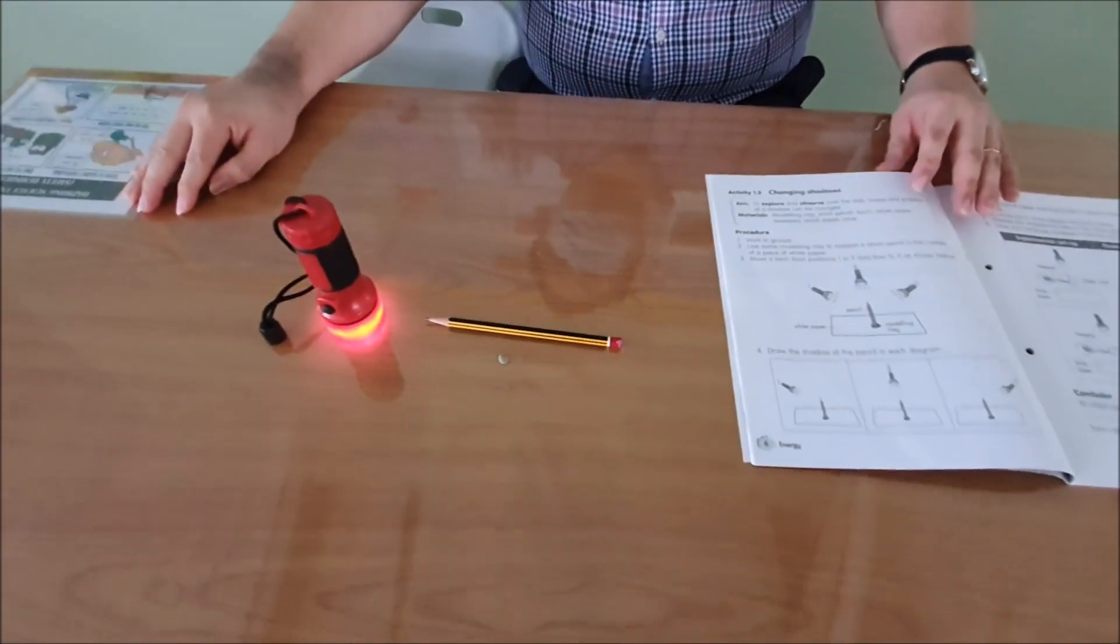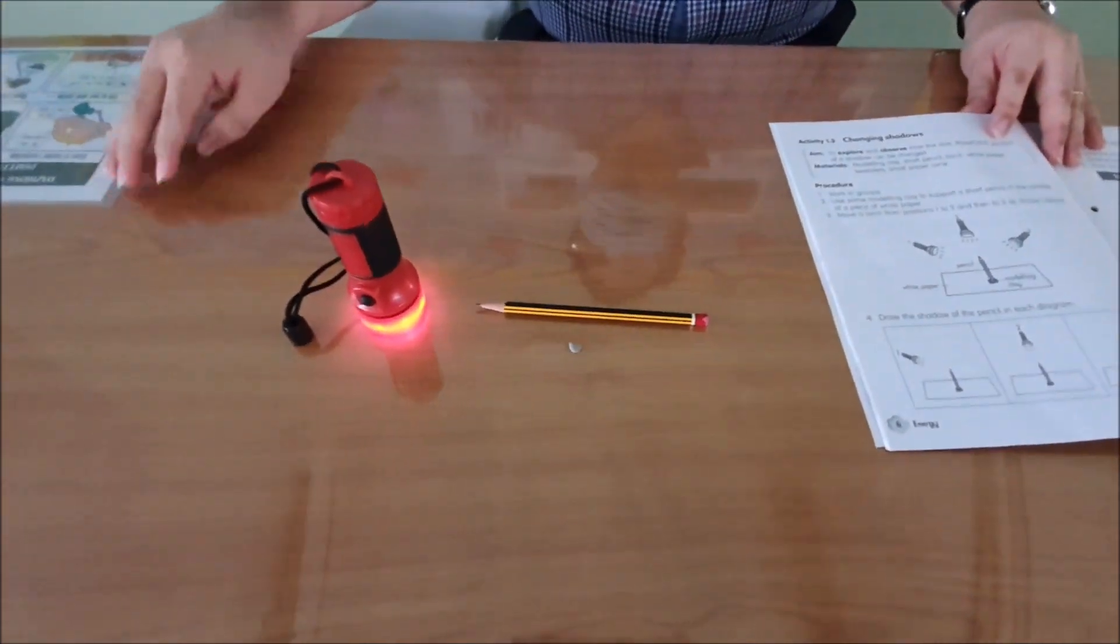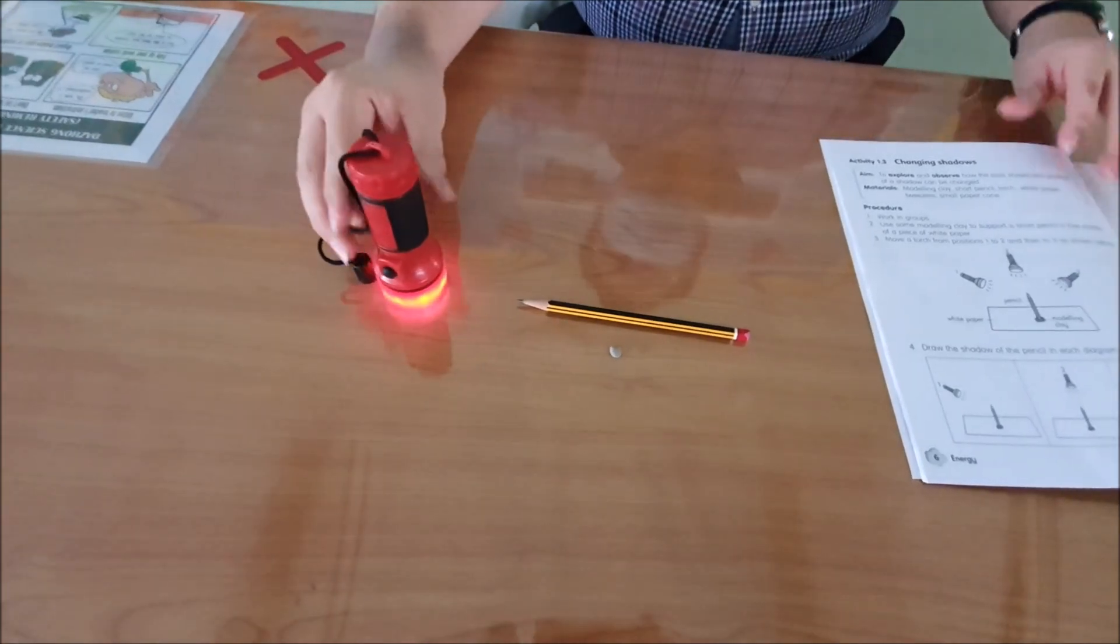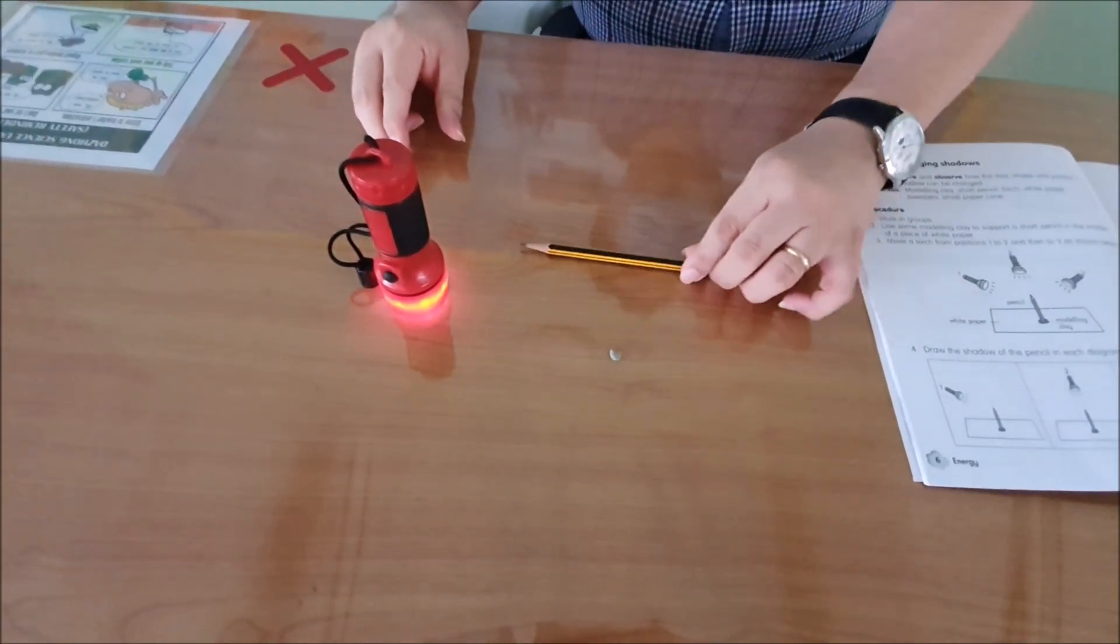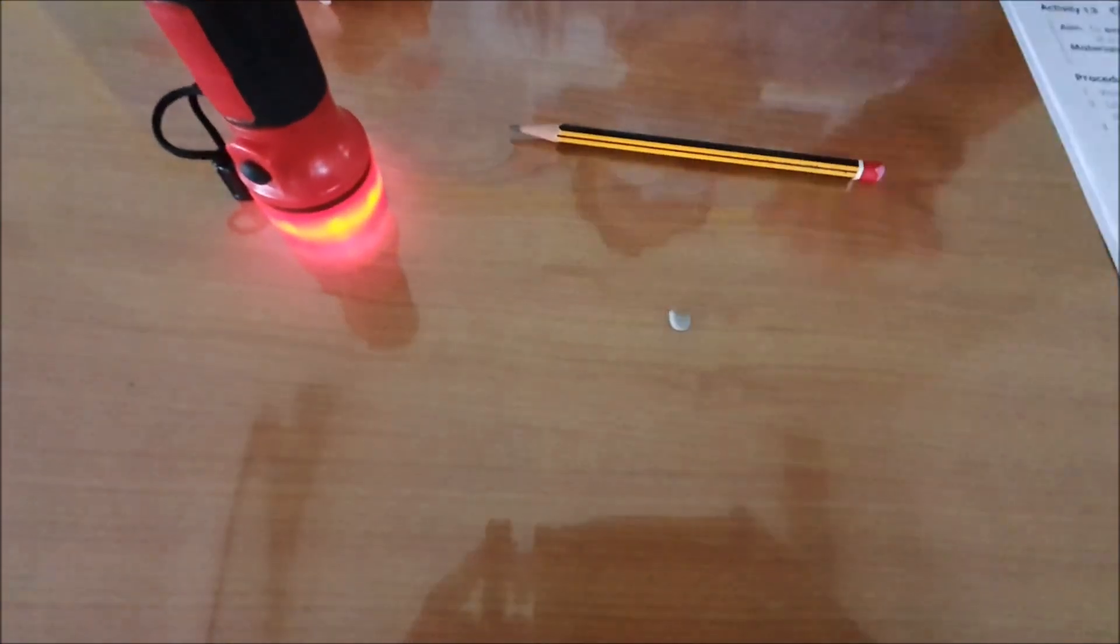We need three items for this experiment: a torchlight, a pencil, and a bit of plaster sink.